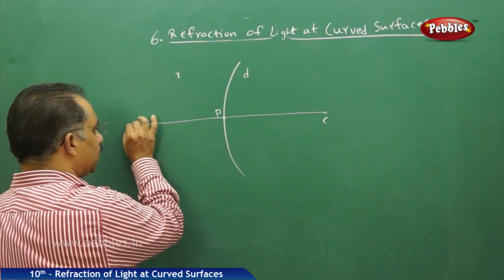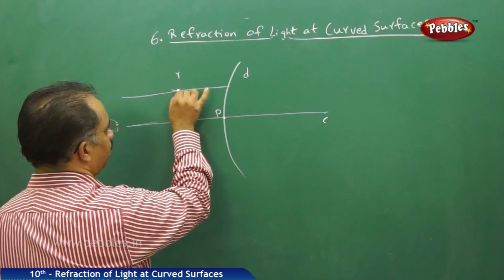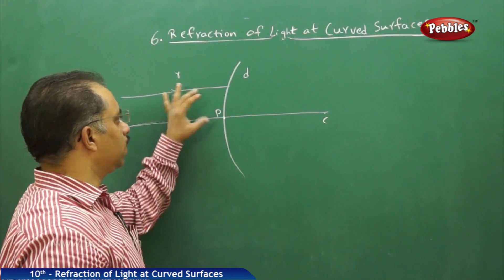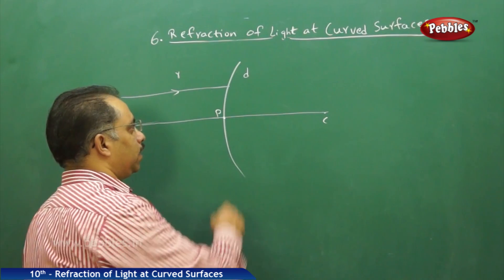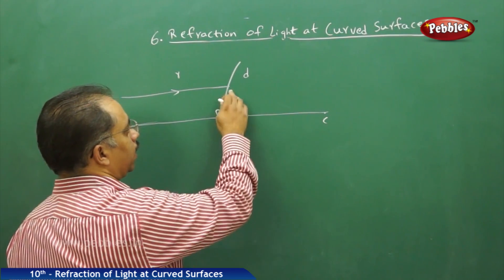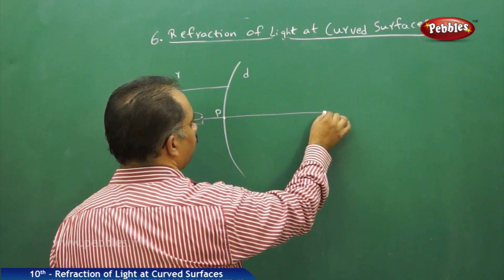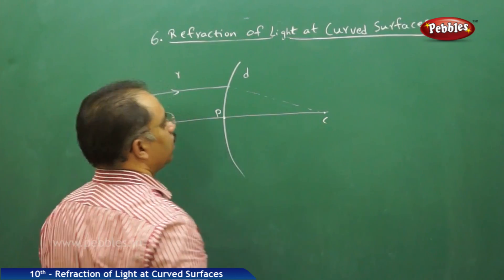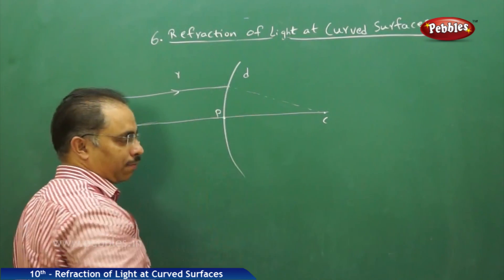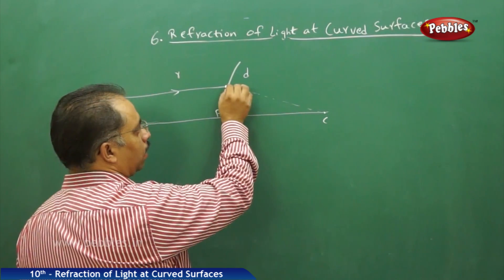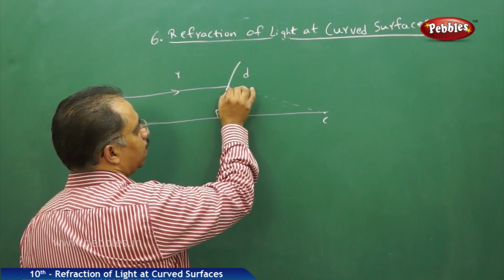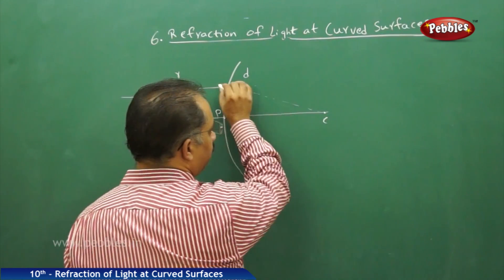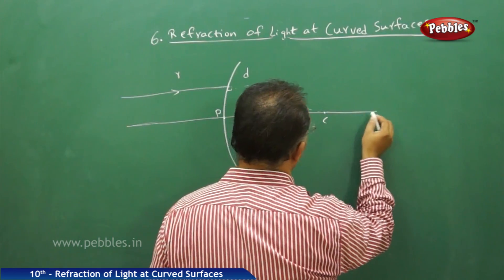Consider a light ray passing parallel to the principal axis. We need to check how this light ray behaves when entering from rarer to denser medium. At the point of incidence, I draw an imaginary line from the centre of curvature to that point — this line is the normal at that point. Instead of going straight, the light ray bends towards the normal and travels through the denser medium, because it is travelling from a rarer medium to a denser medium.